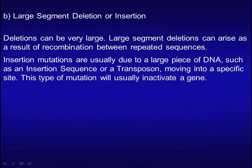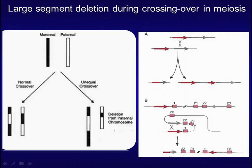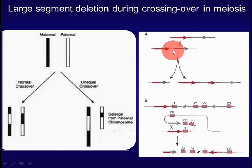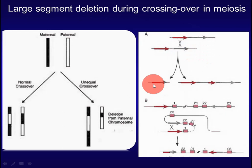Deletions can be very large. Large segment deletions can arise as a result of recombination between repeated sequences. For example, crossing over between these sites on two chromosomes leads to two unequal recombined chromosomes — one with a deletion and another one with an insertion of a segment.